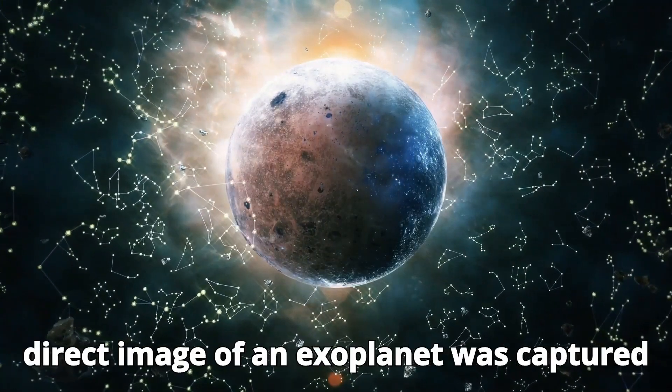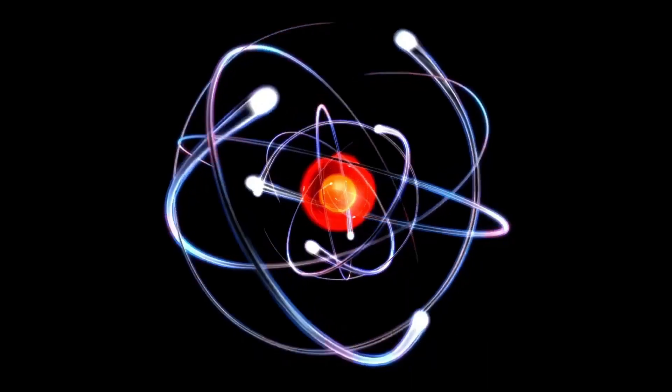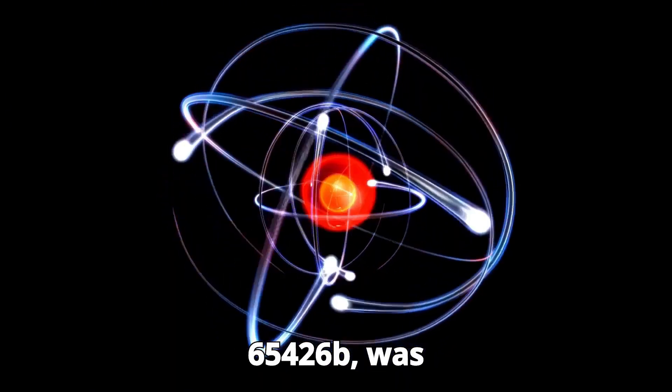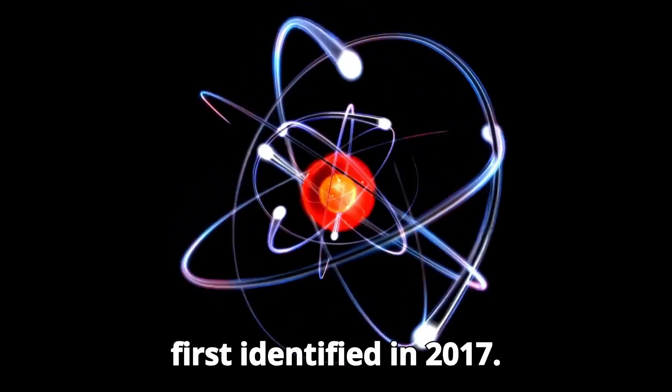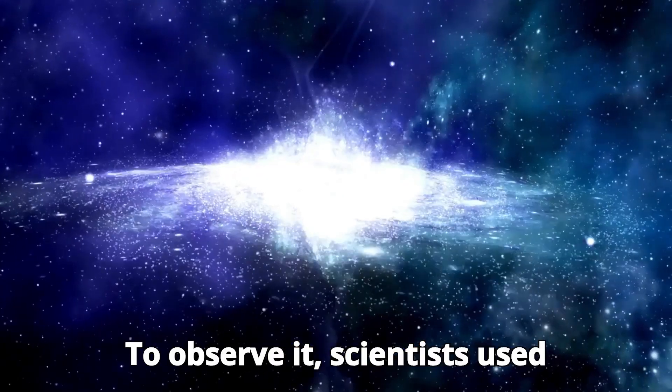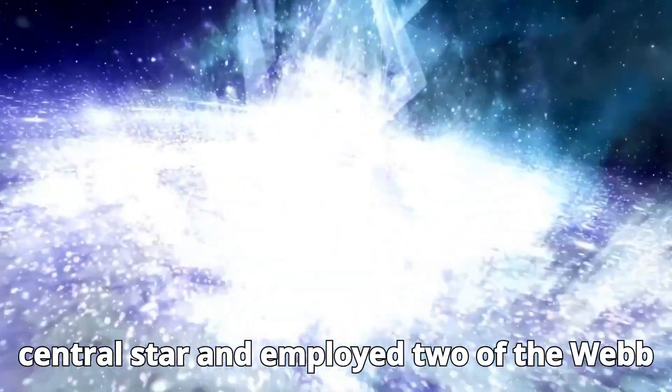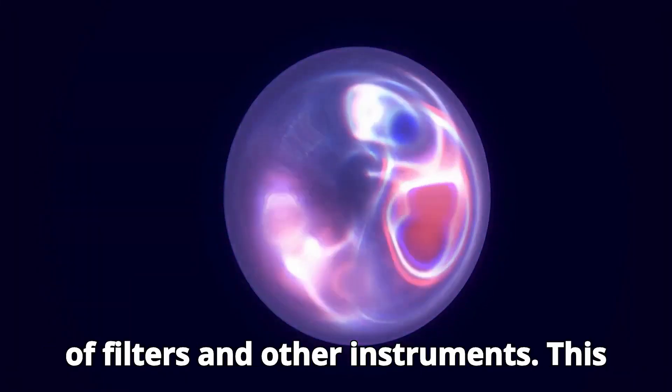The first direct image of an exoplanet was captured in September of last year. This planet, known as HIP 65426b, was first identified in 2017. To observe it, scientists used coronagraphs to block the light from its central star and employ two of the Webb Telescope's cameras, along with a series of filters and other instruments.